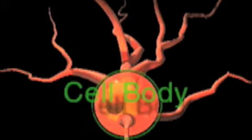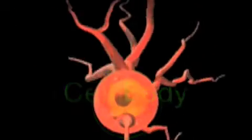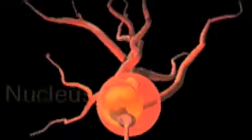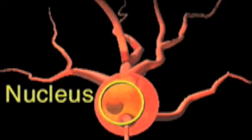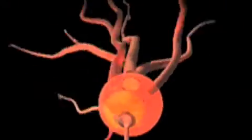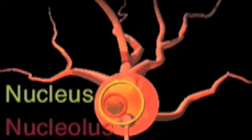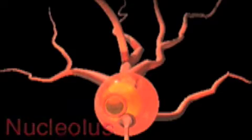The cell body, also called the soma, contains a number of structures that are important for the functioning of the cell. The nucleus contains the cell's DNA. The genes of the DNA determine and control the functions of the neuron. Within the nucleus is another structure, the nucleolus, which transcribes the information contained in the genes into RNA, which in turn makes the substances necessary for the neuron to live and function.